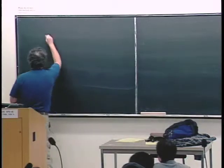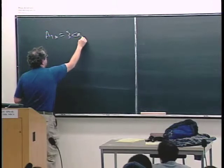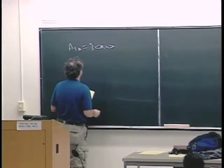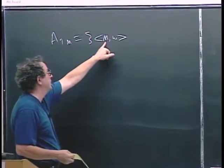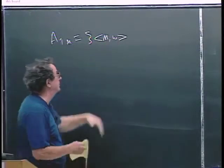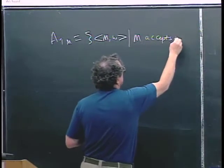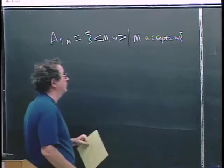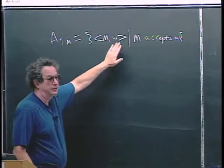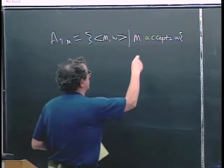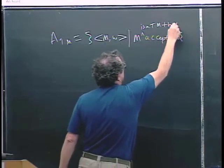Let me remind you of what ATM is. ATM is a language where the input looks like this: a description of a Turing machine M and some input W to that Turing machine, such that M accepts W. This is a perfectly good description of a language — it's a set of strings with some particular property. More explicitly: M is a Turing machine that accepts W.